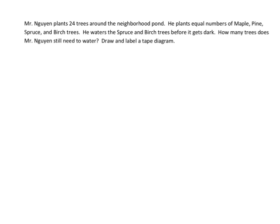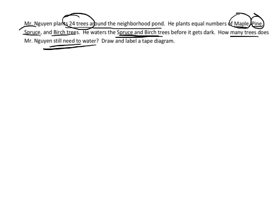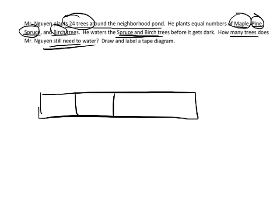In our last example for this video, Mr. Wynn plants 24 trees around the neighborhood pond. He plants equal numbers of maple, pine, spruce, and birch, and he waters the spruce and birch trees before it gets dark. How many trees does he still need to water? So there's our big question. First, we're going to go back and we know he has 24 trees and there's four kinds, so basically we need to do 24 separated into four groups. So here's our 24 trees.